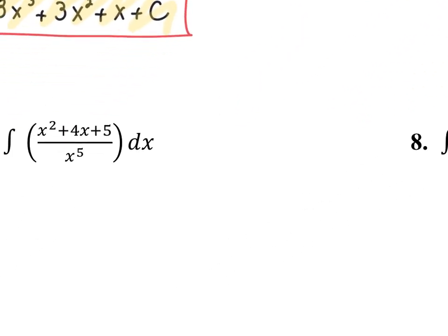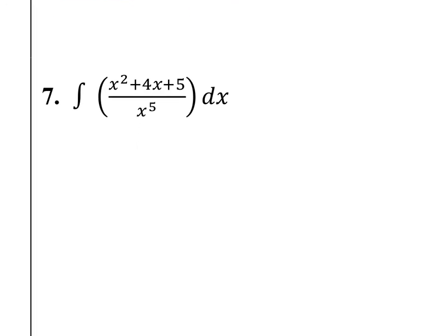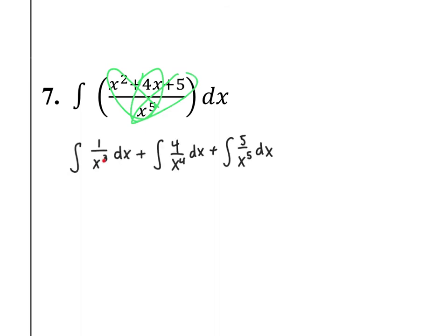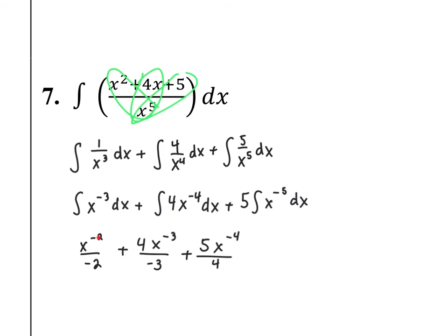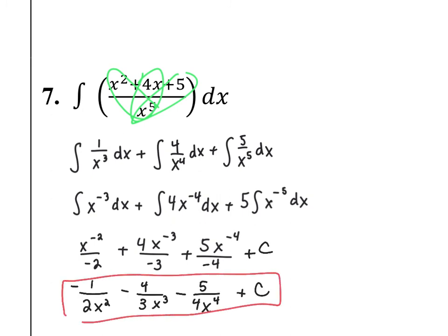In question 7, the integrand is a quotient and there's no quotient rule for antiderivatives. Instead, I simplify algebraically by dividing each term in the numerator by x to the fifth. Then I move the x terms in the denominator to the numerator using negative exponents, which sets up the power rule. Add 1 to negative 3 to get negative 2, divide by negative 2. Add 1 to negative 4 to get negative 3, divide by negative 3. Add 1 to negative 5 to get negative 4, divide by negative 4. Don't forget plus c. The rest is simplification to reach the final answer.